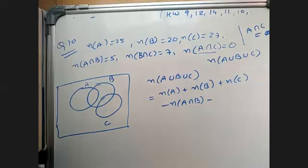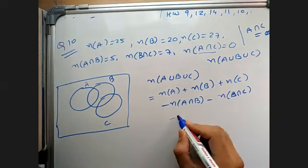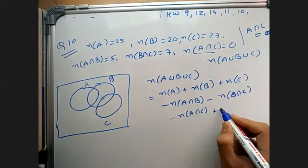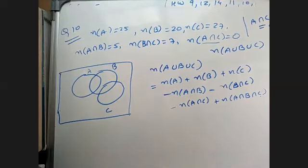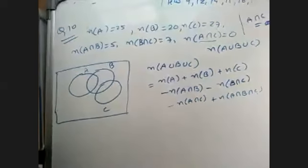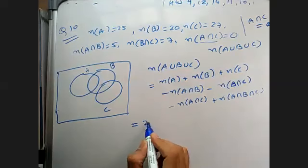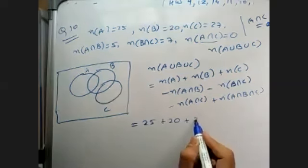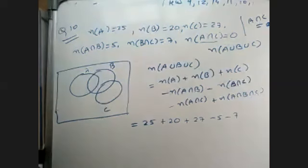So if you put all the values: number of elements in A is 25, number of elements in B is 20, number of elements in C is 27, A intersection B is 5, B intersection C is 7.